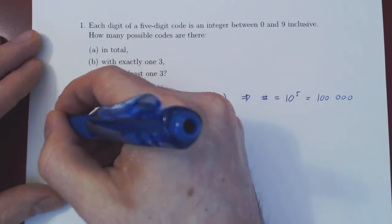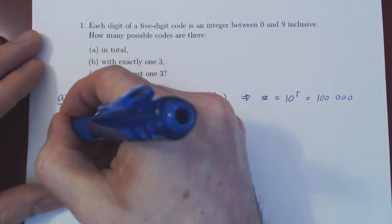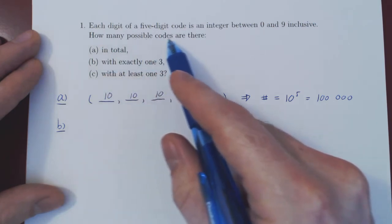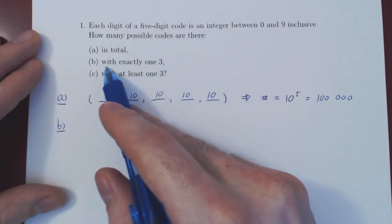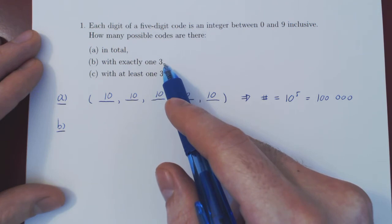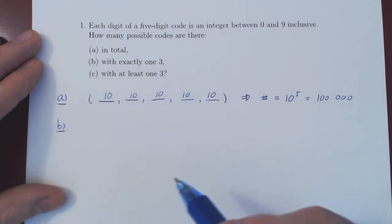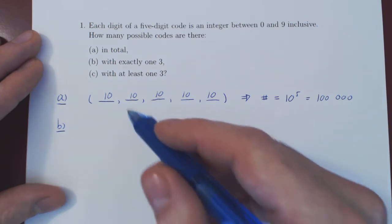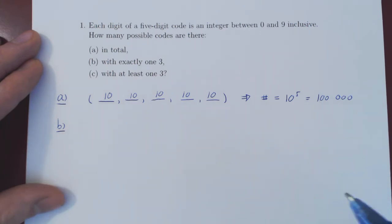Let's look at Part B. We're asking how many possible codes contain exactly one 3. Your code must contain one 3, but only one 3 — it can't contain two, three, four, or five 3's, and it can't contain no 3's at all. It has to contain exactly one 3.